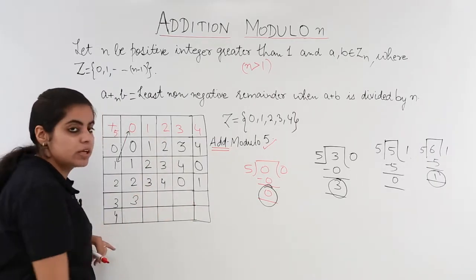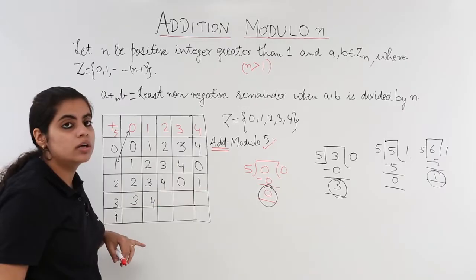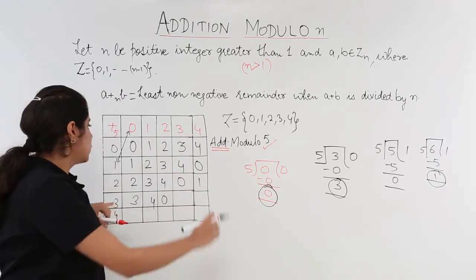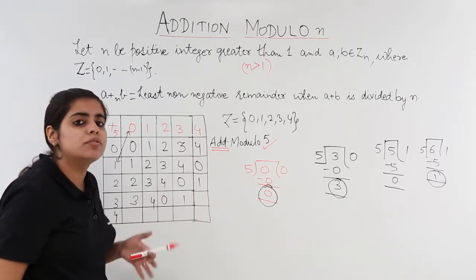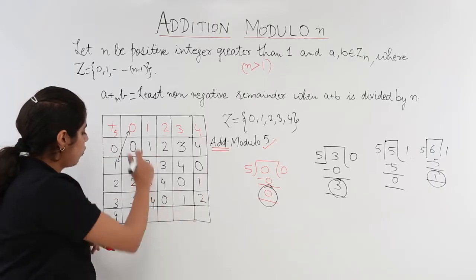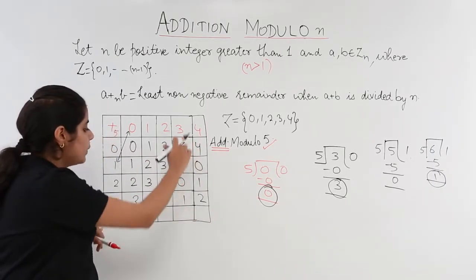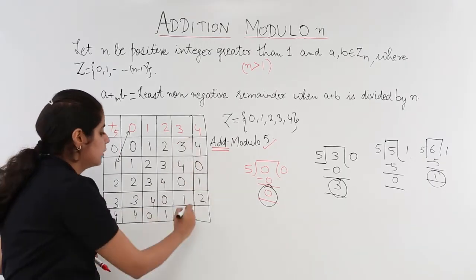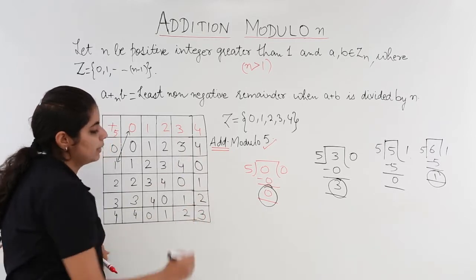Filling the table further: 3 plus 0 gives 3; 3 plus 1 gives 4; 3 plus 2 gives 5, remainder 0; 3 plus 3 gives remainder 1; 3 plus 4 is 7, 7 divided by 5 gives remainder 2. Similarly, 4 plus 0 is 4; 4 plus 1 is 5, remainder 0; 4 plus 3 gives remainder 2; 4 plus 4 gives remainder 3.